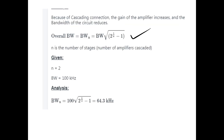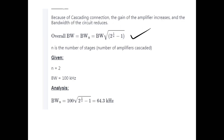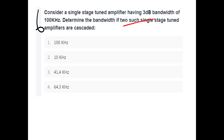Two such single stages are cascaded, so n is 2 and bandwidth is 100 kHz. Substituting: 100 into root of (2 raise to 1/2 minus 1), the result is 64.3 kHz. Option D.